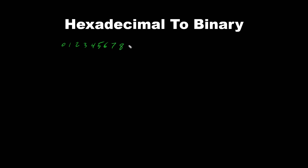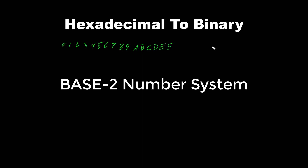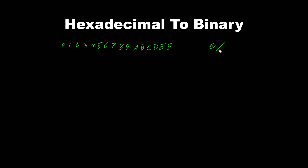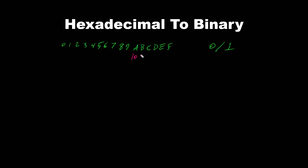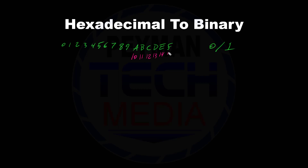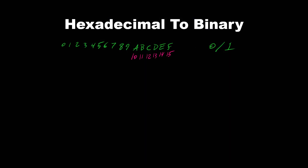The hex digits continue: 6, 7, 8, 9, A, B, C, D, E, and F. Binary is a base 2 system — we only have 0 and 1. To keep a single digit in hexadecimal: A equals 10 in decimal, B is 11, C is 12, D is 13, E is 14, and F is 15.